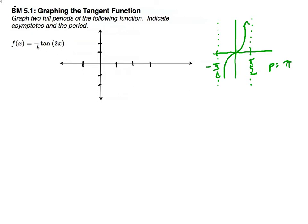But all we have is a horizontal reflection and the period is also changed. So my period, normally π, I'm going to cut that in half with the 2. So actually my period is π/2.